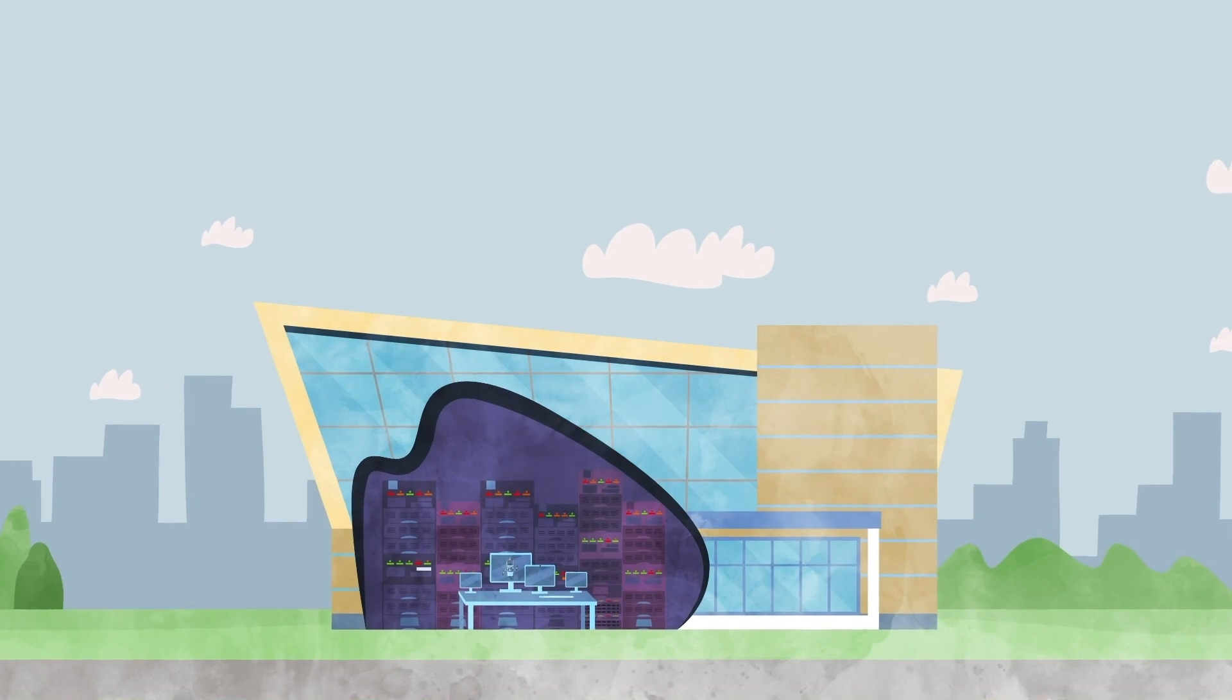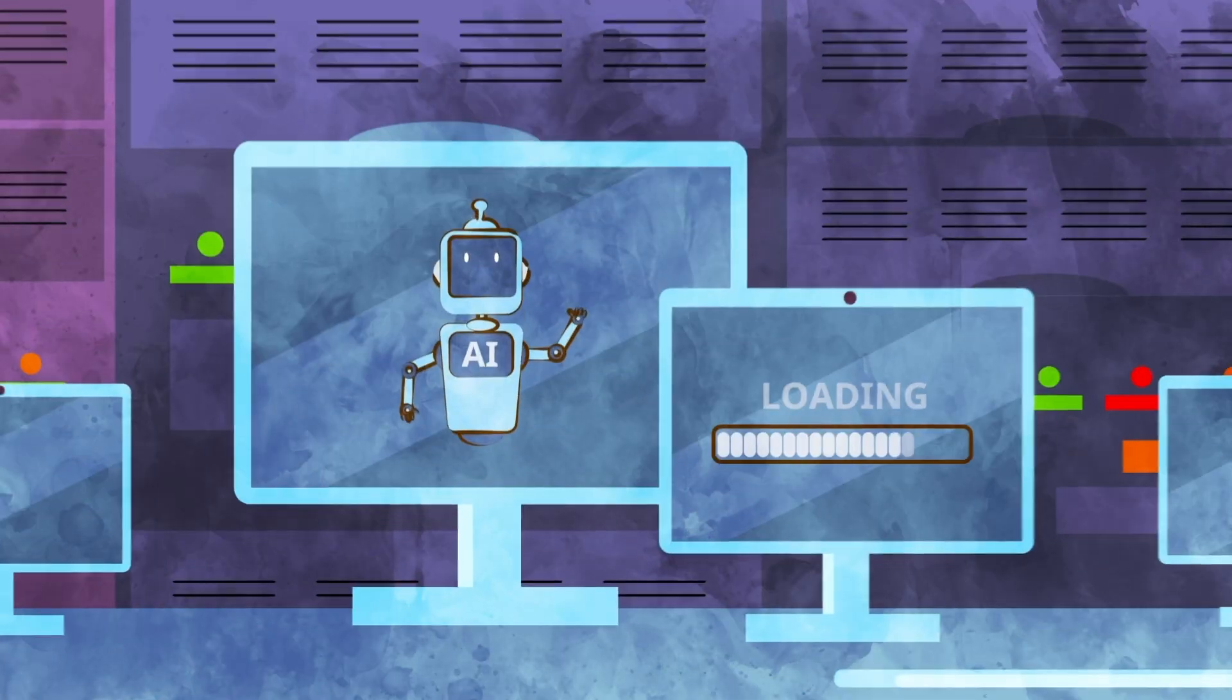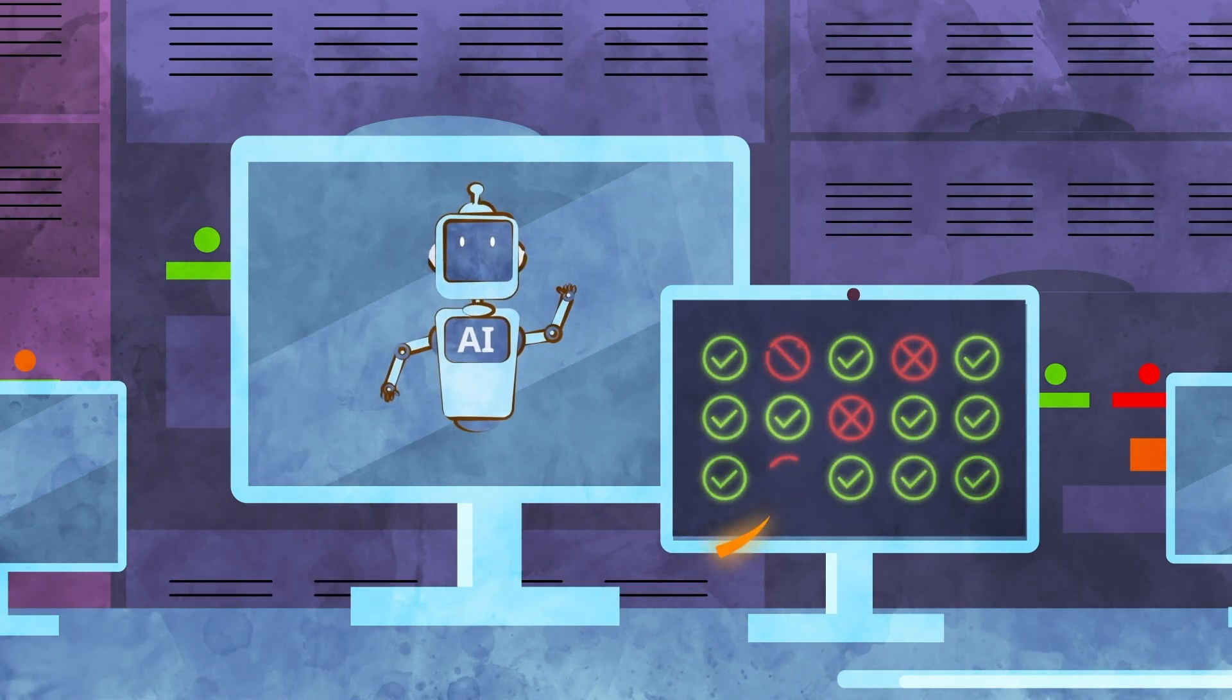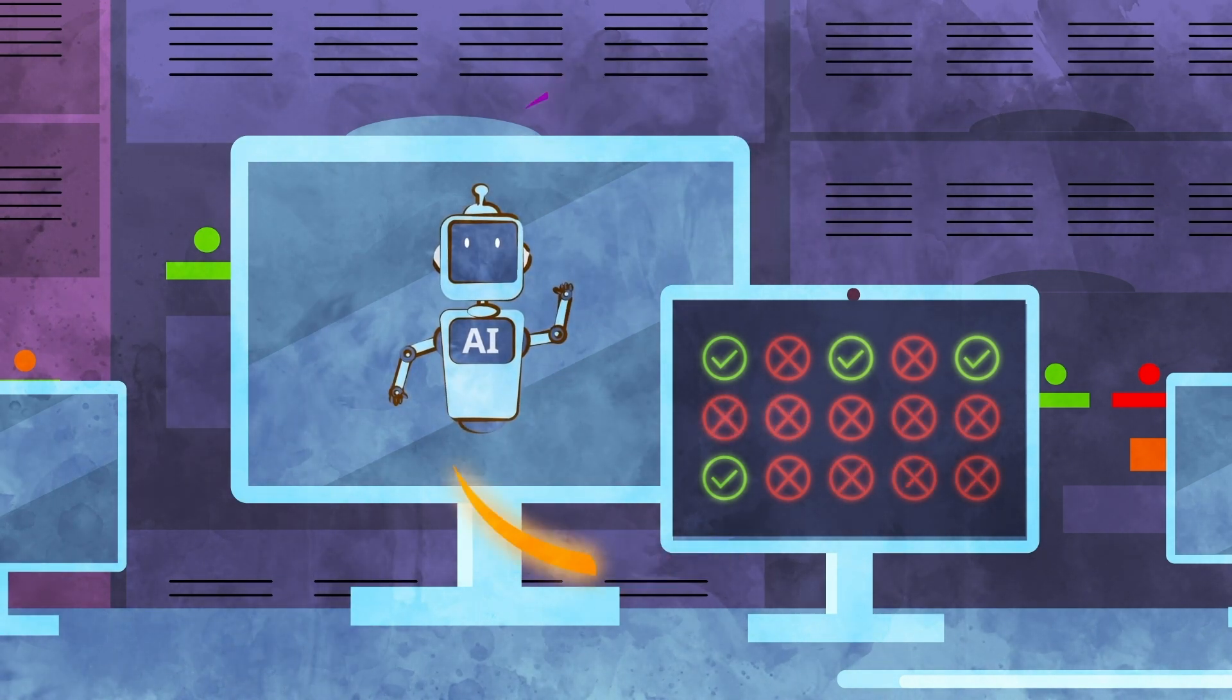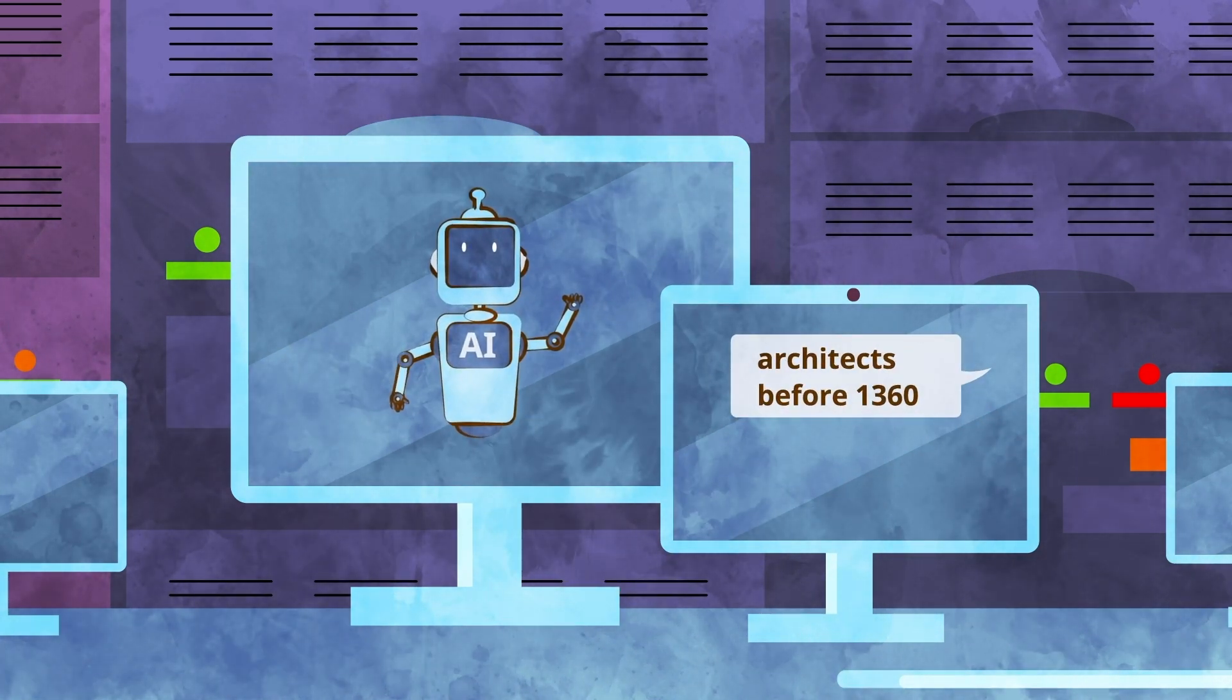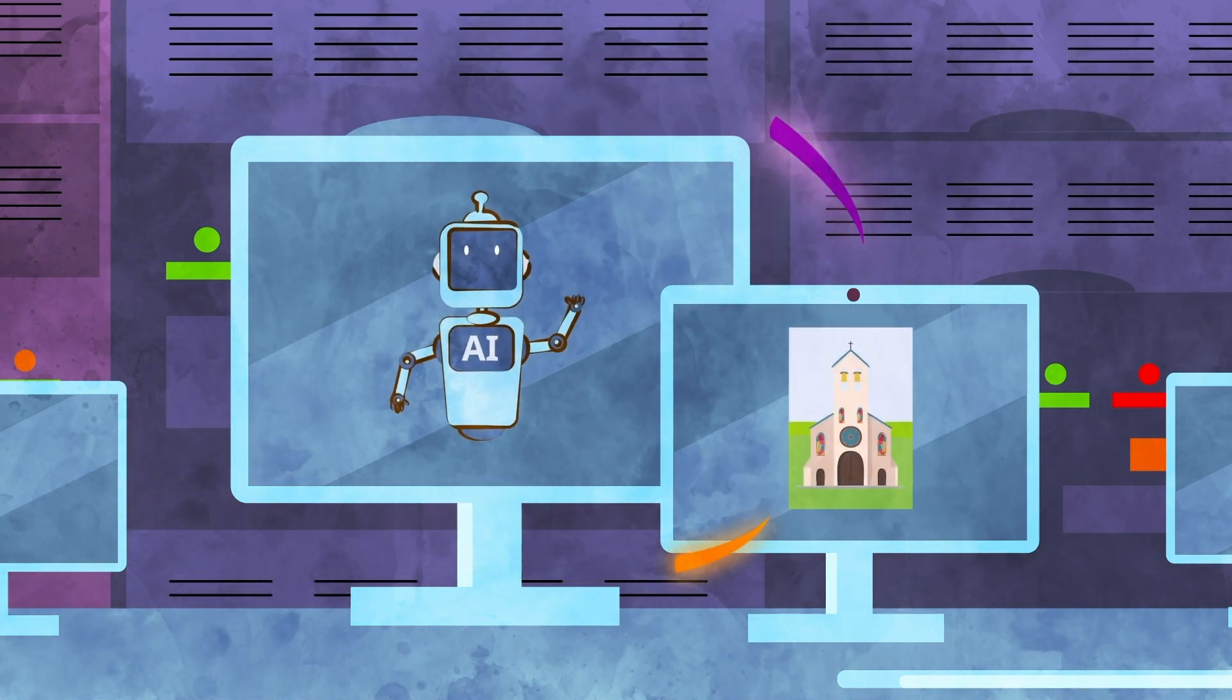For instance, programmers are now warning of something called model collapse when AI is trained on an internet increasingly saturated with AI-generated material. When AI models consume their own output, it creates a feedback loop, and the quality of the answers they give declines. Popular Mechanics described an example of model collapse when a team of researchers trained a machine learning model on its own answers for ten generations.